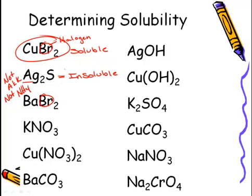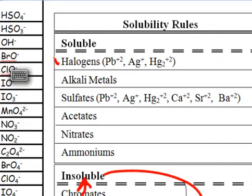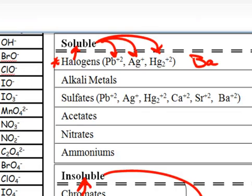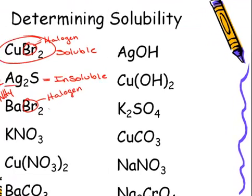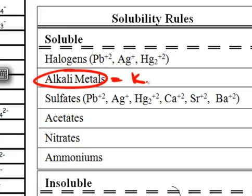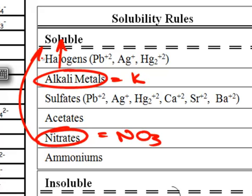BaBr2: bromine is a halogen, halogens are soluble except with lead, silver, or mercury. Barium is not one of those three, so barium bromide is soluble. KNO3: potassium is an alkali metal and NO3 is nitrate — the solubility table shows both alkali metals and nitrates are soluble, so KNO3 is soluble in two ways.